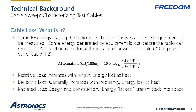RF power can be lost as heat in the materials that make up the cable, or it can be leaked or radiated into space by escaping the cable. Radio signals are primarily transmitted using some form of coaxial cable where the signal travels through a center conductor and an outer conductive shell. There are many designs and materials used for various applications.